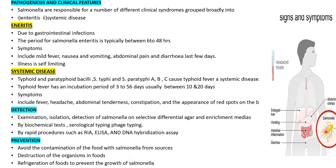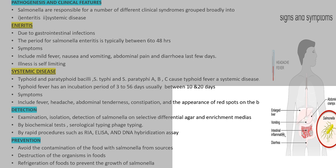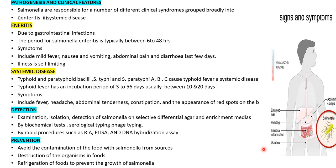Looking at Salmonella under the microscope, peritrichous flagella are visible throughout the body surface — hair-like flagella covering the entire cell. Symptoms of salmonellosis include diarrhea, intestinal inflammation, vomiting, enlarged liver, and abdominal cramps. These symptoms can become more severe if the patient is not treated promptly after diagnosis.